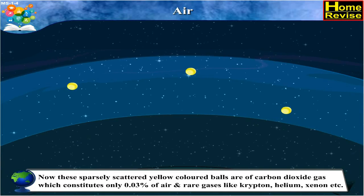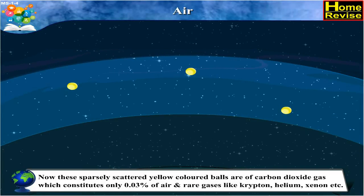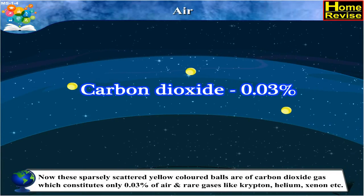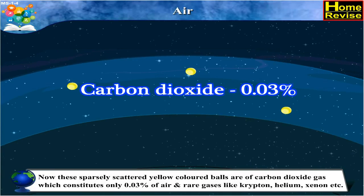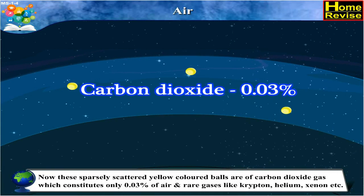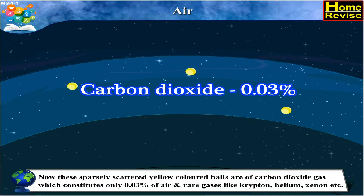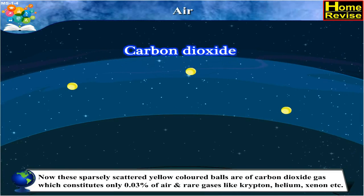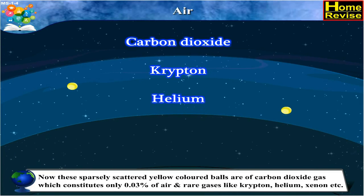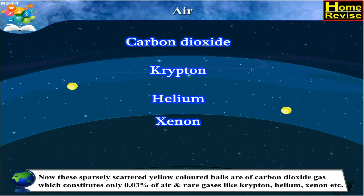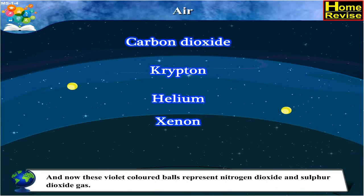Now, these sparsely scattered yellow colored balls are of carbon dioxide gas, which constitutes only 0.03% of air, and rare gases like krypton, helium, xenon, etc.